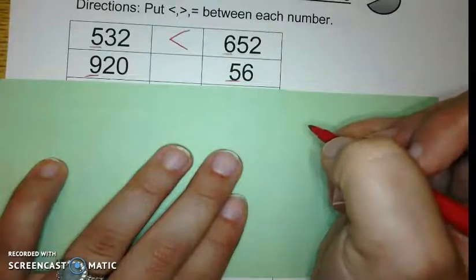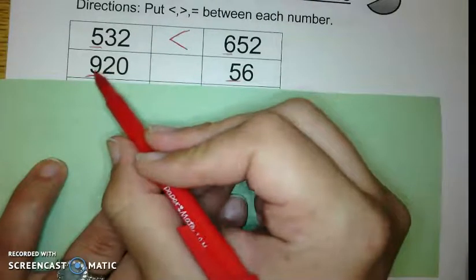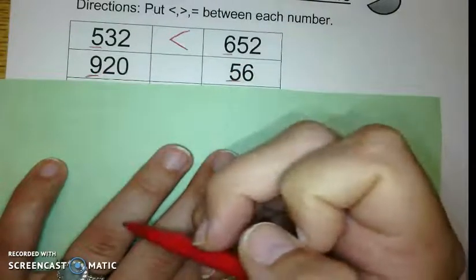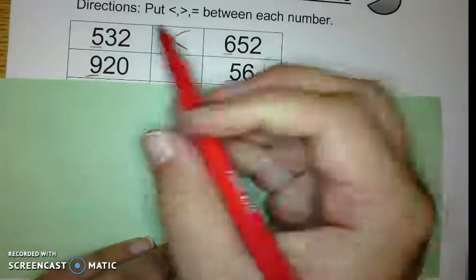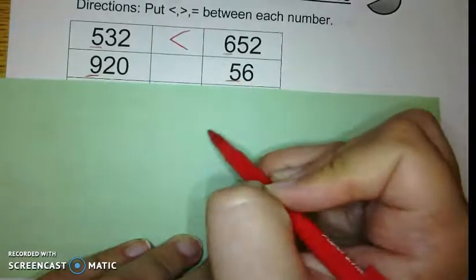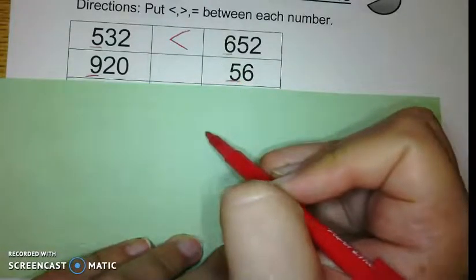So I'm going to compare these. Well, hundreds and tens are not the same place value. So I just need to think, which is bigger? Hundreds or tens?